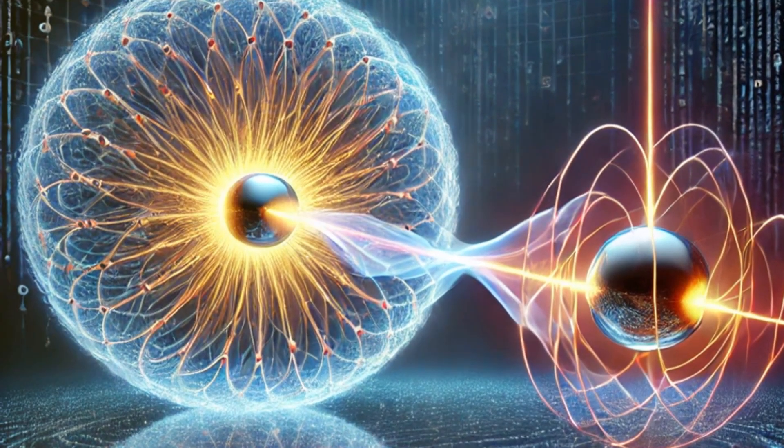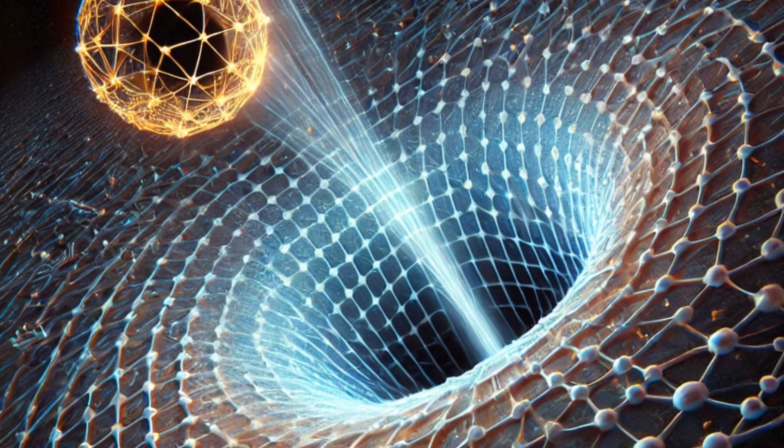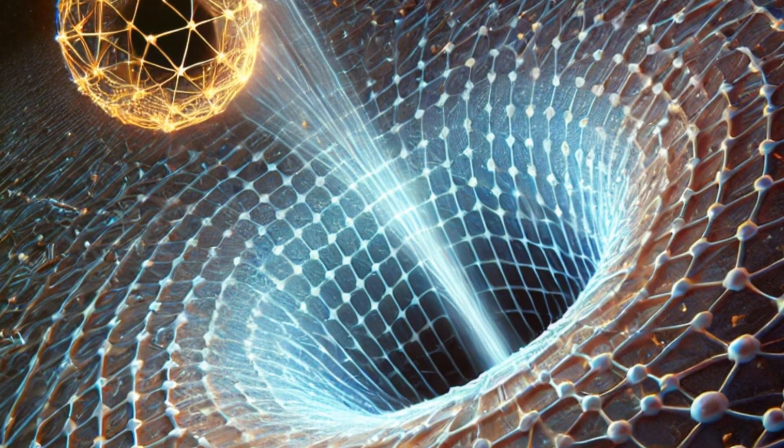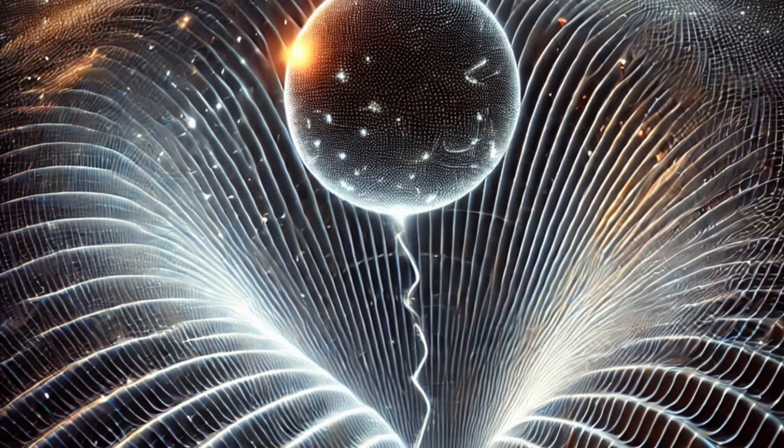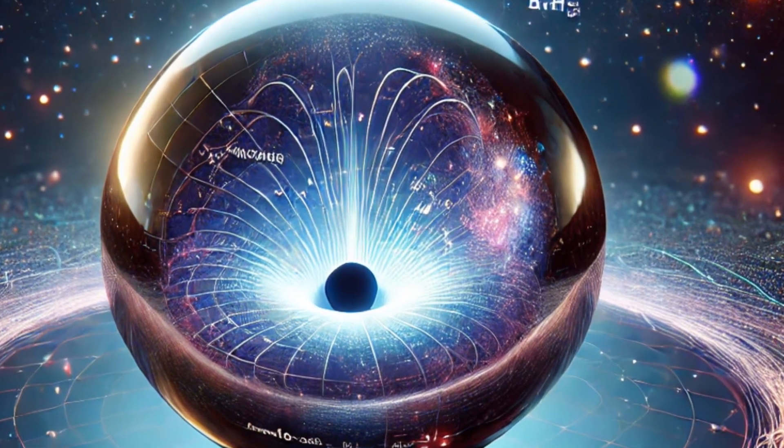Hawking radiation is like a double-ended light needle. At one end, there's a virtual particle with negative energy inside the black hole, and at the other end, there's a virtual particle with positive energy that's positioned on the event horizon.